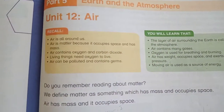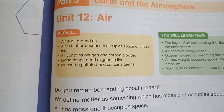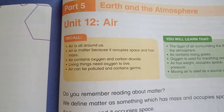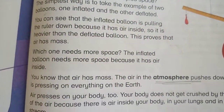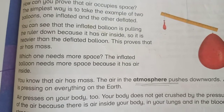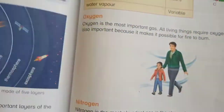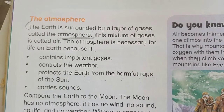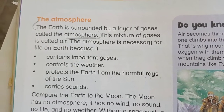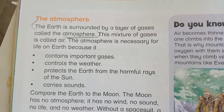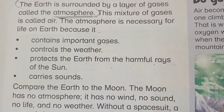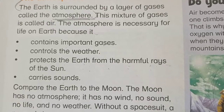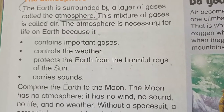In the previous session, we learned that air has mass and occupies space, and that air is all around us. We also learned about atmospheric pressure — air has pressure. We also learned about the atmosphere: the Earth is surrounded by a layer of gases known as the atmosphere. The atmosphere is very necessary for Earth because it contains important gases, controls the weather, and protects the Earth from the harmful rays of the sun. It is also important for carrying sound.